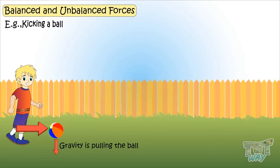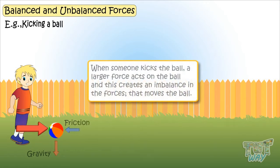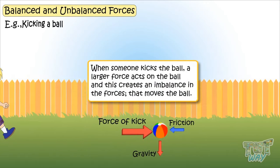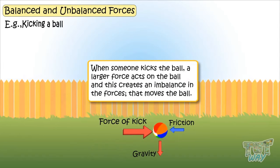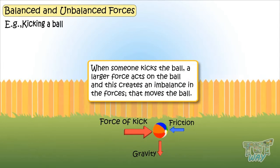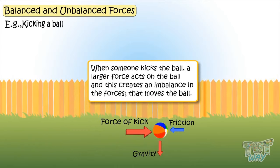Gravity is pulling the ball, ground is pushing the ball. Both forces were equal and opposite. That is, balanced forces were acting on the ball. But when someone kicked it, a larger force acted on the ball and there created an imbalance in the forces that moves the ball.